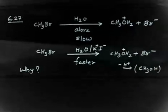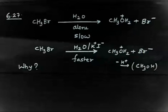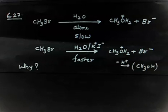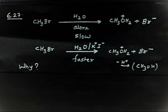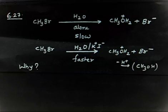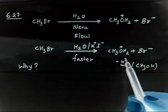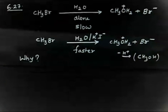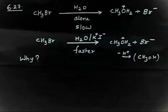Now the question is: why does the rate increase if we use KI — K+I-? What is the function of I- in this case? The mechanism is SN2 — everybody knows primary alkyl halides undergo SN2. In the first case H2O is acting as a nucleophile. In the second case H2O is also acting as a nucleophile, but why has the rate increased? What is the function of I-?